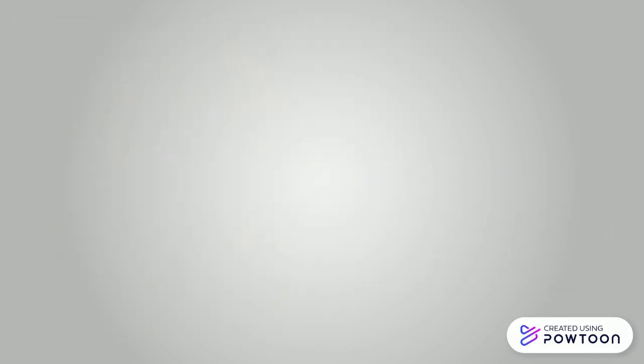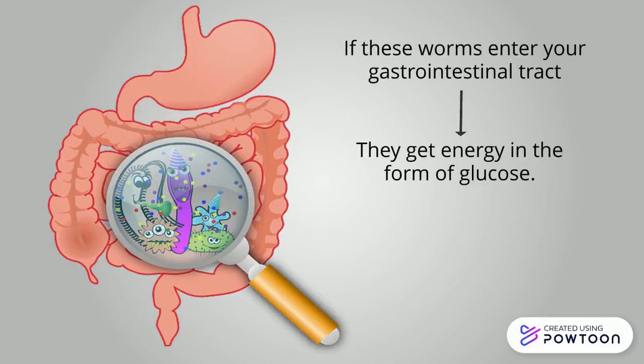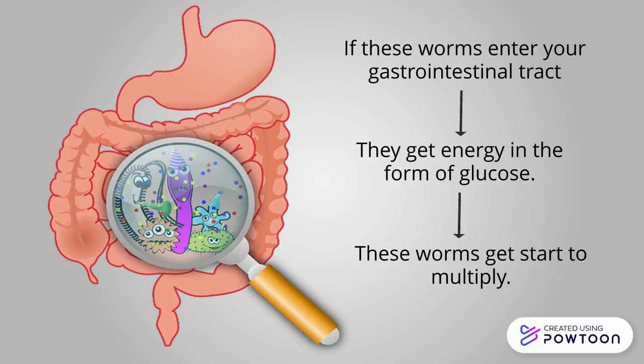When these worms enter your gastrointestinal tract, they start to get energy in the form of glucose. Then these worms grow rapidly and start their own multiplication.